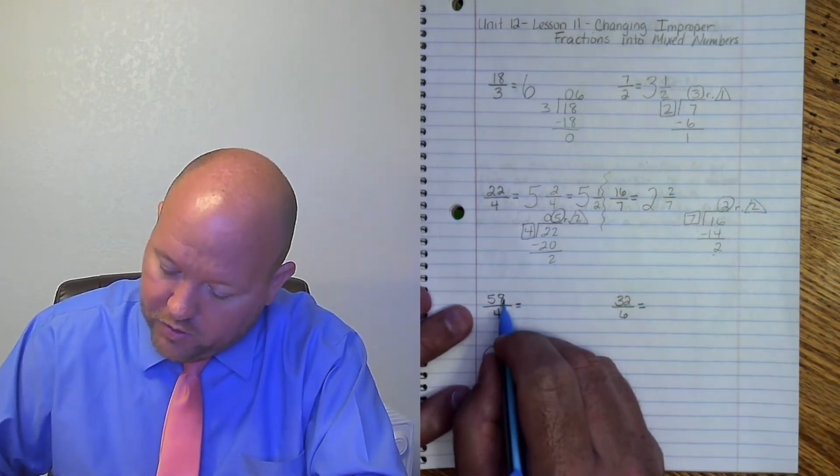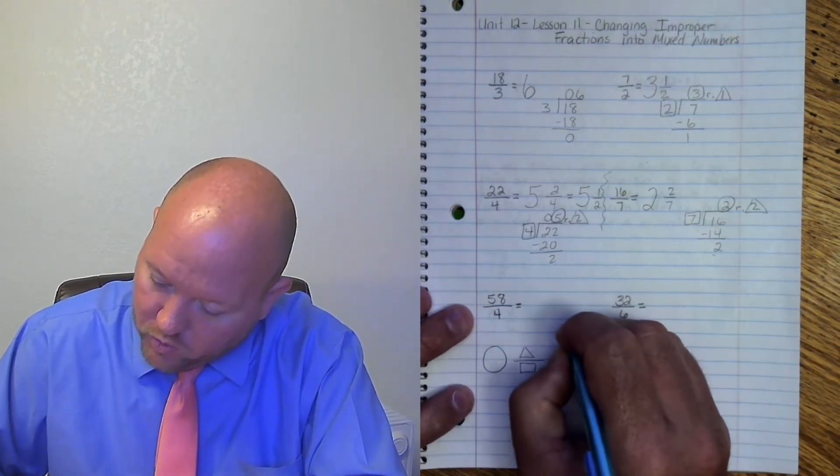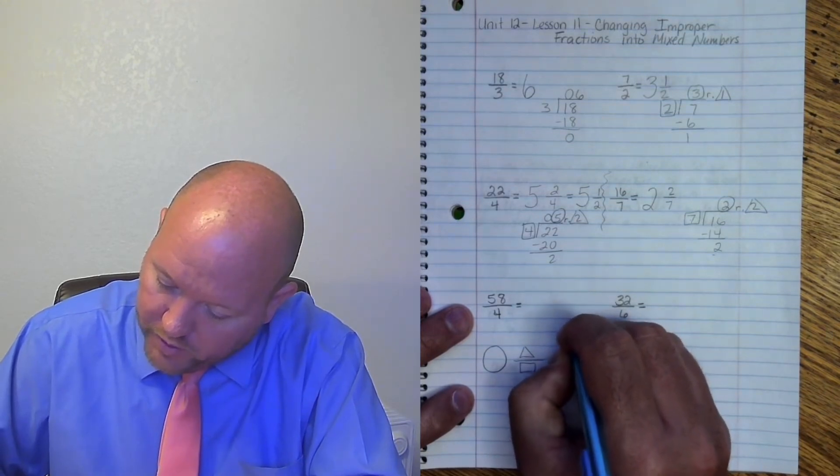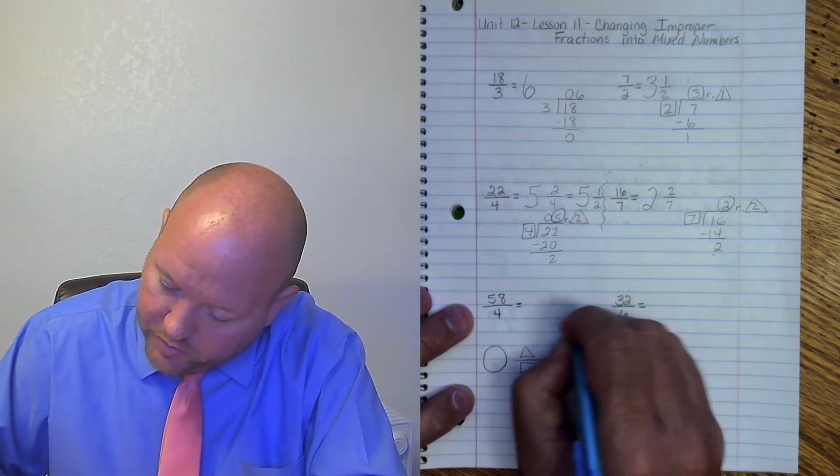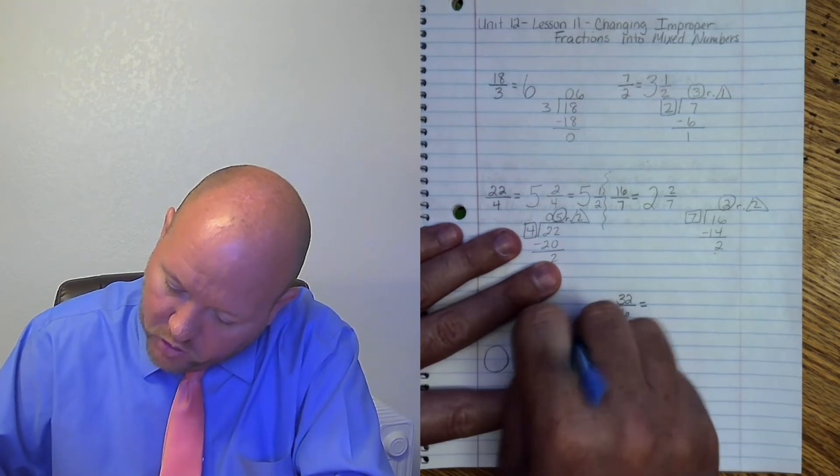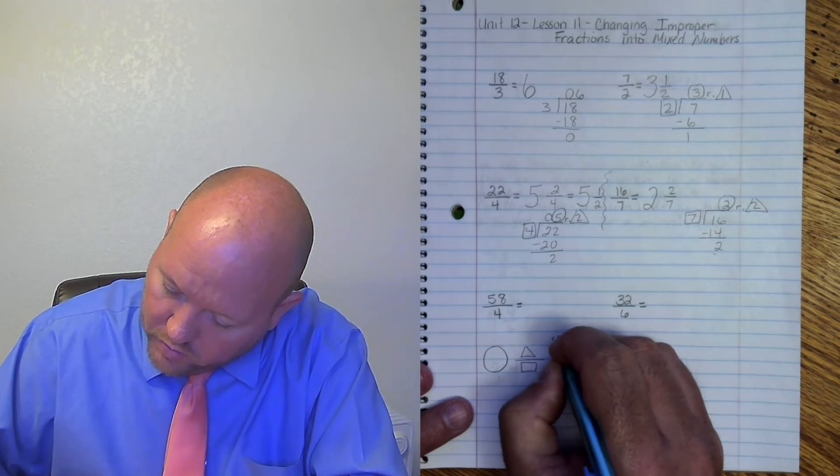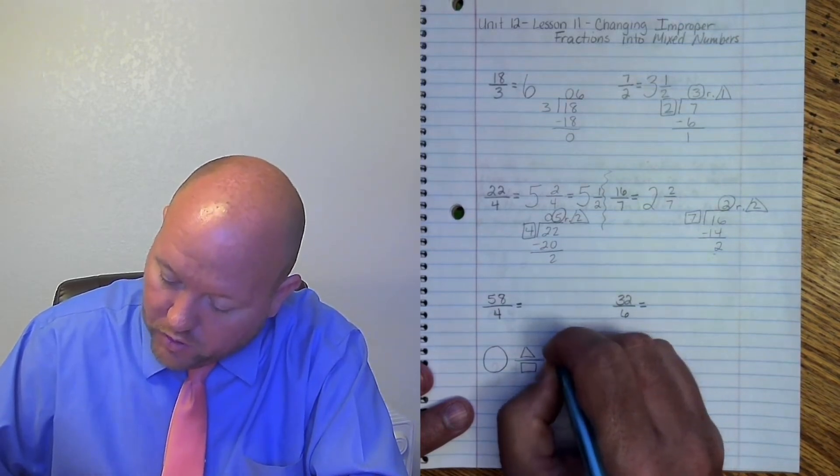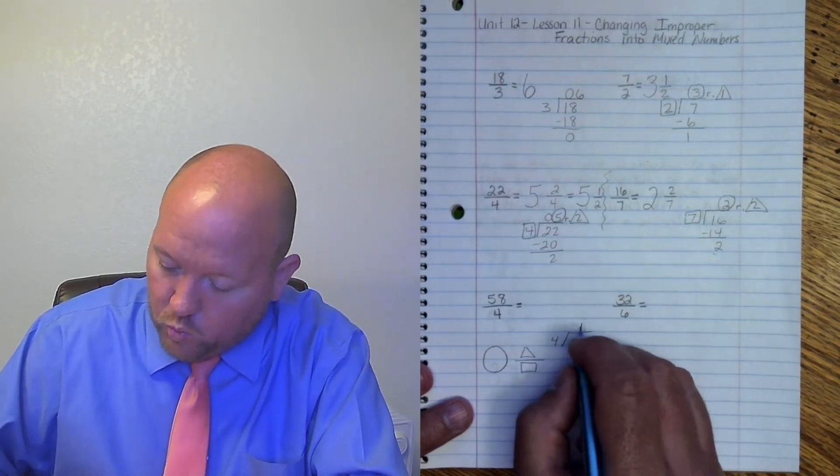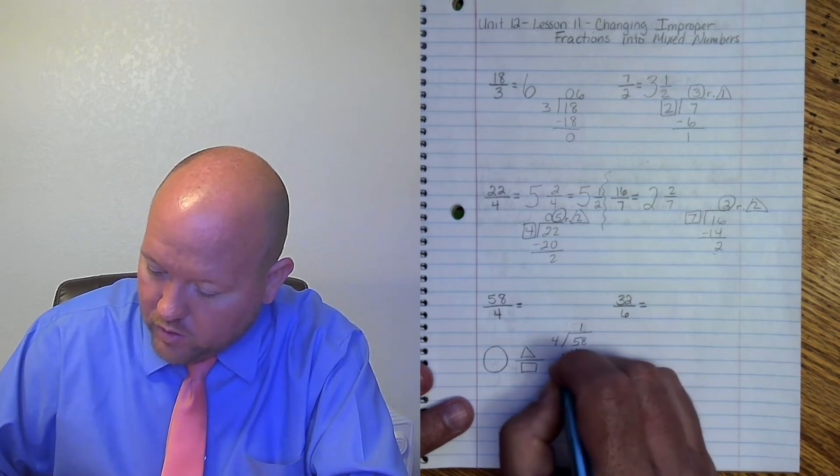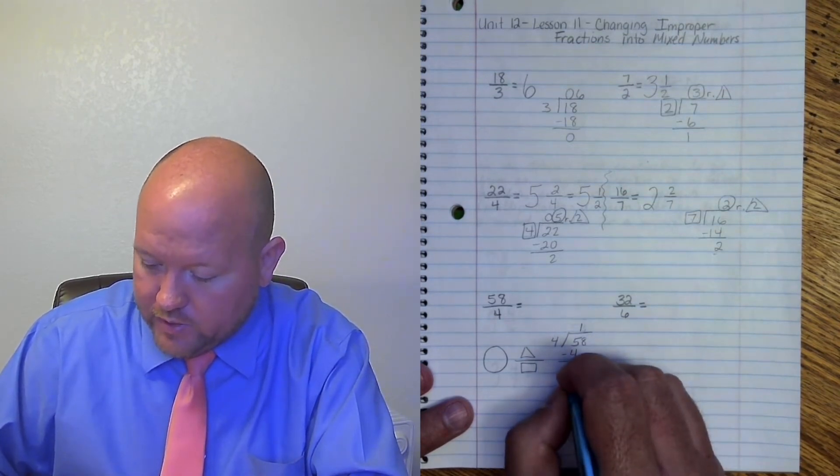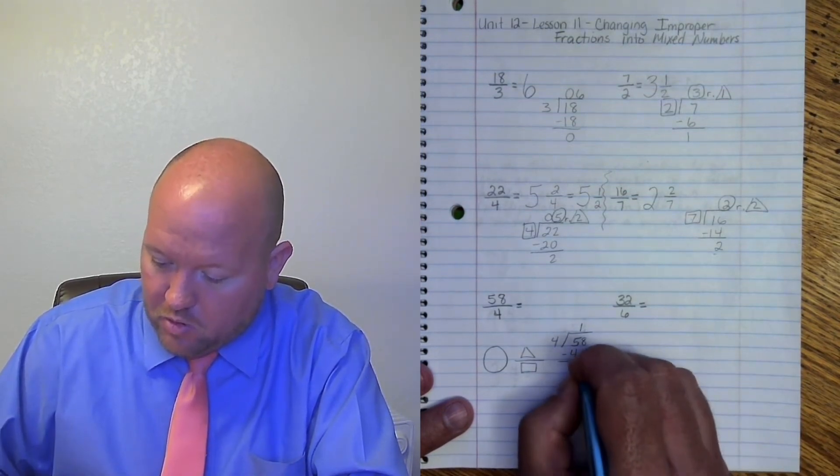Now I need to do 58 divided by 4. So 58 divided by 4. 4 goes into 5 one time. 1 times 4 is 4. 5 minus 4 is 1. Bring down the 8.